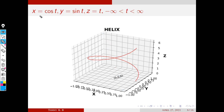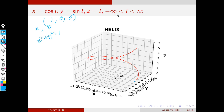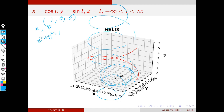Similarly, consider x equal to cos t, y equal to sin t, z equal to t, where t varies from minus infinity to plus infinity. Since x squared plus y squared equals cos squared t plus sin squared t equals 1, the x and y components always move on a unit circle. But z equals t is increasing. So when t equals 0, the point is (1, 0, 0), and as t increases, the curve spirals upward — this is called a circular helix.